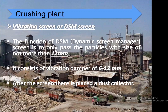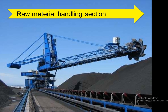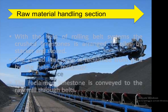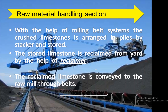A vibrating screen or DSM screen is installed to pass only particles of not more than 12 millimeters in size, with a vibration damper range of 6 to 12 millimeters. After the screen there is a dust collector. In the raw material handling section, crushed limestone is arranged into piles by a stacker using rolling belt systems and stored in the yard.